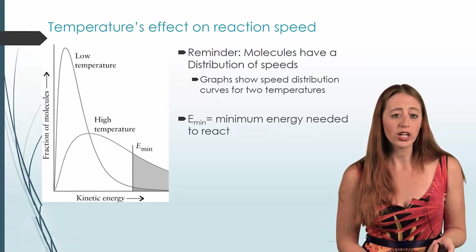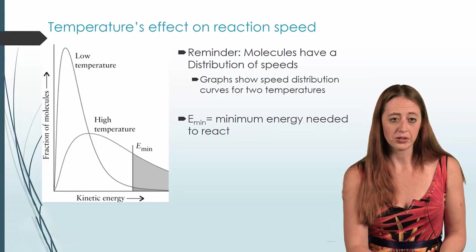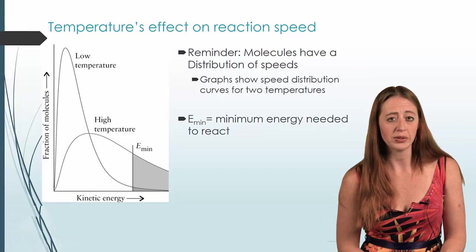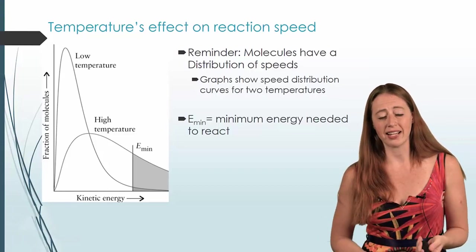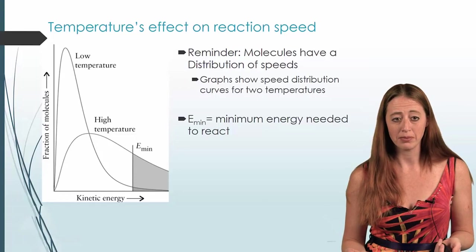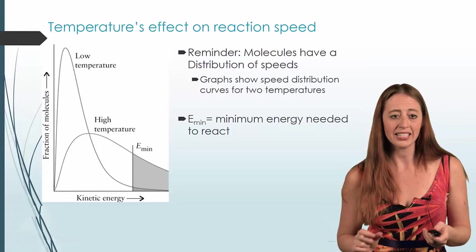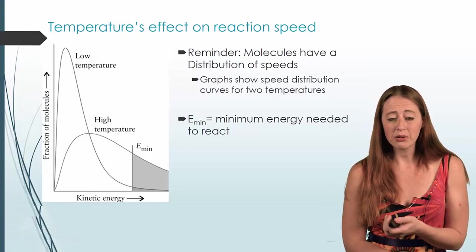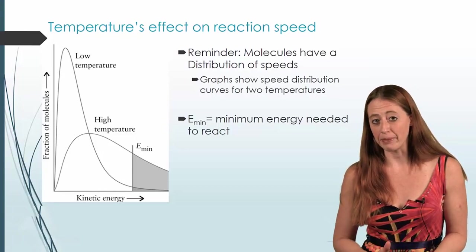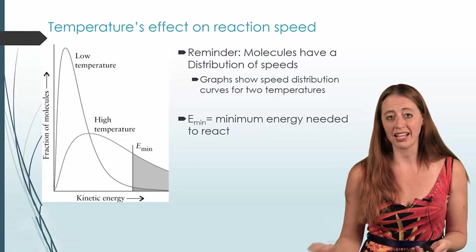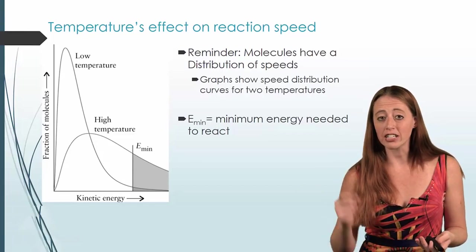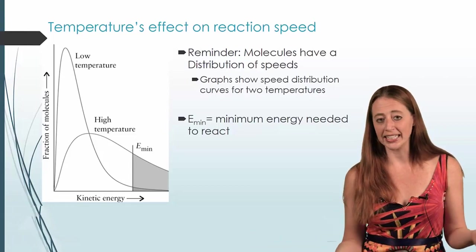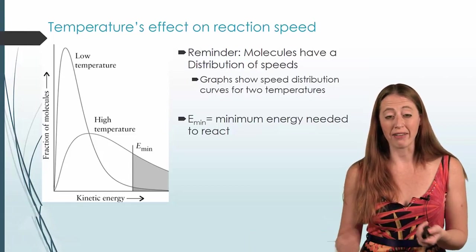If we look at our low temperature graph, take a second to trace it down until you hit the E_min. The molecules that are past that E_min - look at that tiny little section of graph. It's hardly any of the molecules. That doesn't mean the reaction won't happen; it's just that only those molecules above that line can react. There are very few molecules that have enough energy to have that reaction happen. Most of them will collide and go on their way without ever reacting.